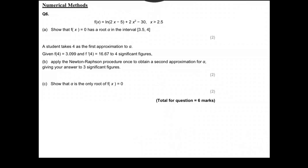All right, next part. Student takes 4 as the first approximation to alpha. So we're using Newton-Raphson, and that's nice, they've done the derivative for us. The Newton-Raphson equation is x_{n+1} = x_n - f(x_n) / f'(x_n).